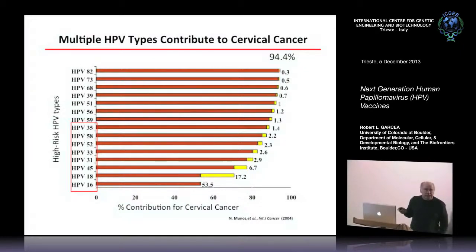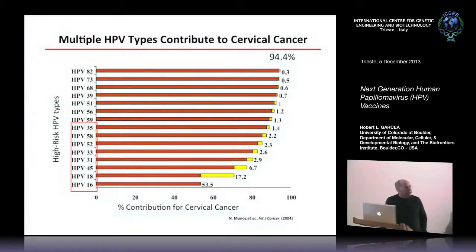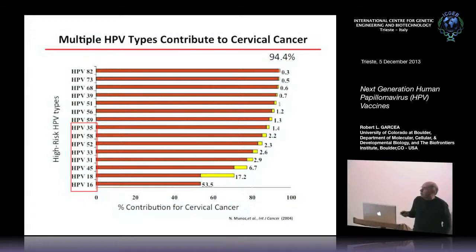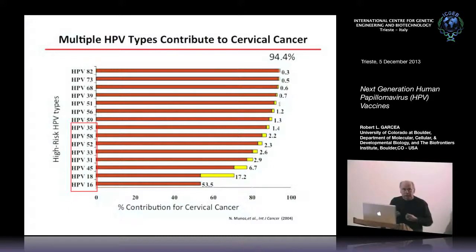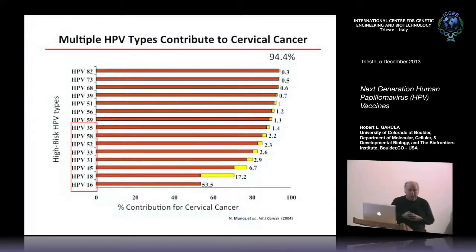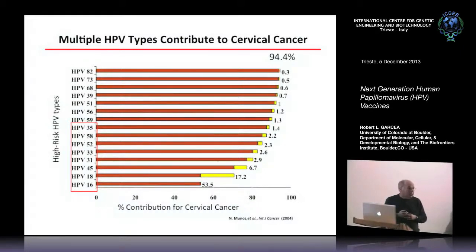There are hints that Merck is trying to make a nonavalent vaccine covering more and more types. But as you can see, if you're only covering 70 percent of the high-risk types, you still need cervical cancer screening — pap smears — which costs the US health care system about three to four billion dollars a year. So there's obviously a need for covering more types.